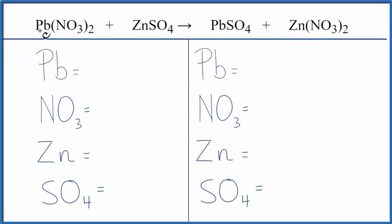In this video, we'll write the balanced equation for Pb(NO3)2 plus ZnSO4. That's lead(II) nitrate plus zinc sulfate. Let's count the atoms up on each side of the equation.